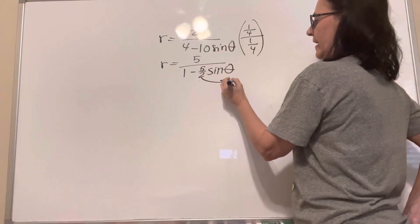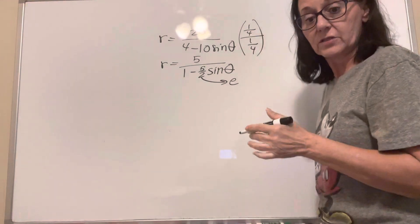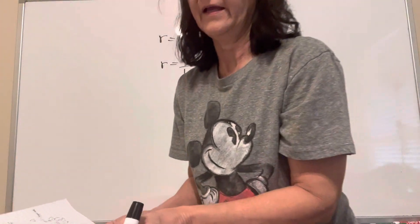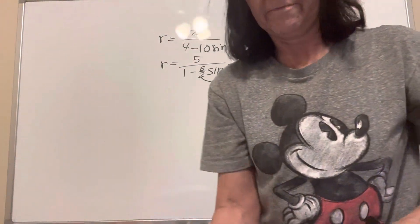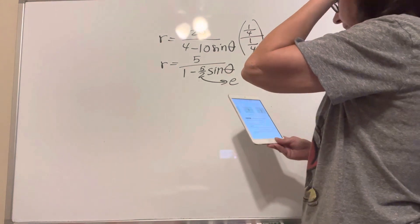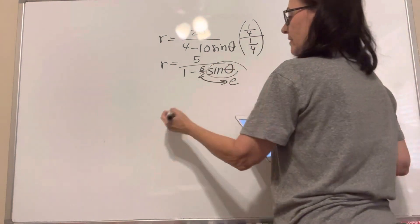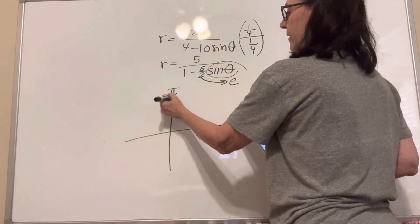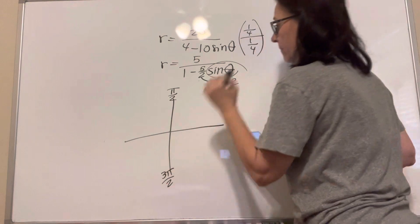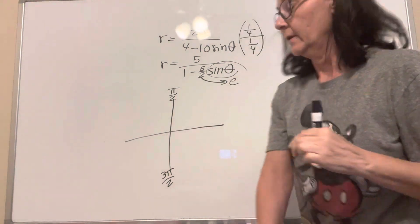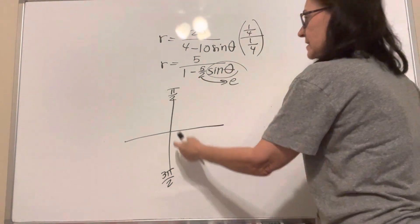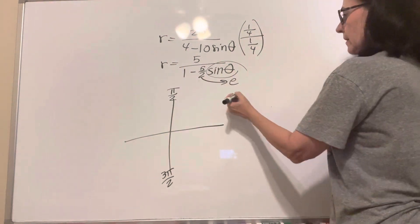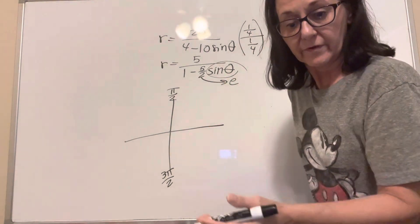Five-halves is my eccentricity, so I know it's going to be a hyperbola. They want the vertices. Because we have sine, we're now on the y-axis. So on the y-axis, we're going to look at pi over 2 and 3 pi over 2. Those are going to be our points to find our r values — that'll give us our vertices.